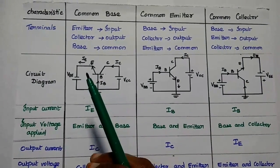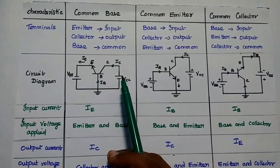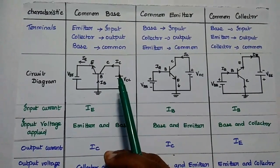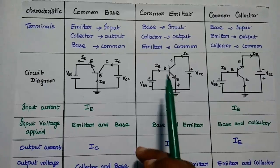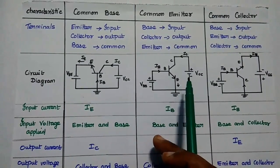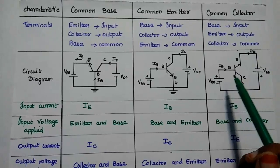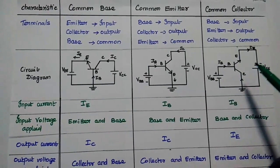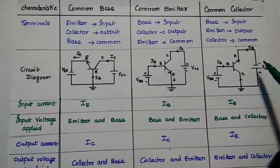For common base, the input current is emitter current and the output current is collector current. For common emitter, input current is the base current and output current is the collector current. For common collector, input current is the base current and output is the emitter current.